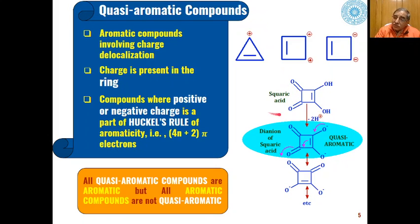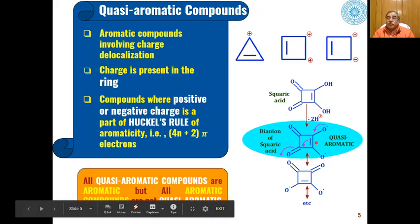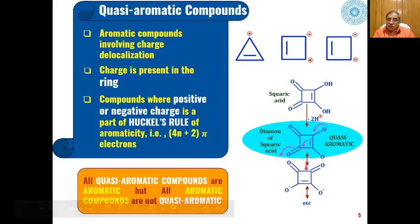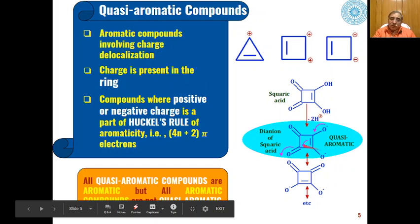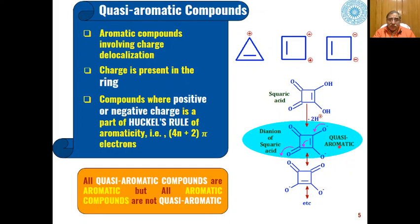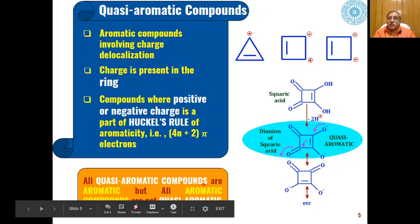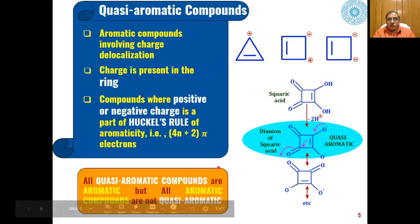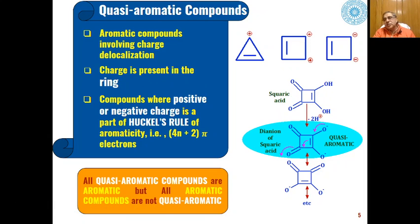Squaric acid is another example. If we remove the two very acidic protons, delocalization of charge can take place. Because this is a planar, cyclic molecule with delocalization that obeys Hückel's rule, the dianion of squaric acid is a quasi-aromatic compound. Basically all quasi-aromatic compounds are aromatic, but not all aromatic compounds are quasi-aromatic. Quasi-aromatic compounds are a class within aromatic compounds.